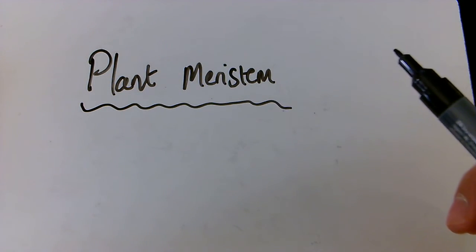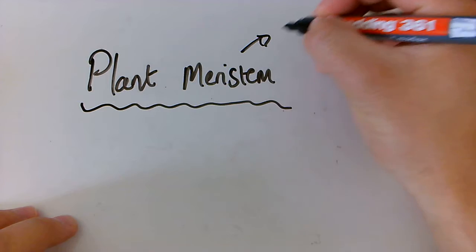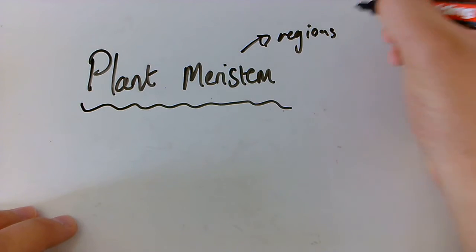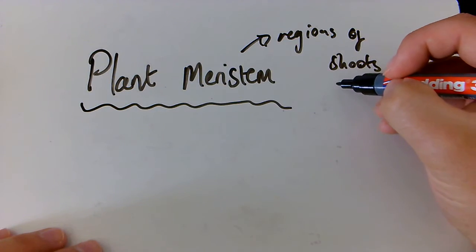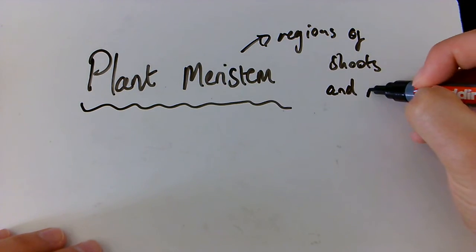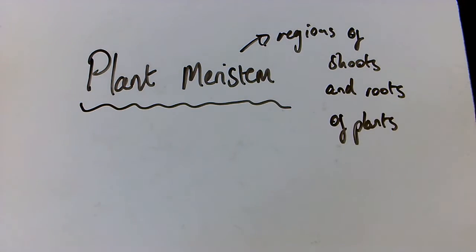Plant meristem cells is going to be the last type of stem cell video that I'm going to create. And these plant meristem cells, they are found in regions of shoots and roots of plants. So that is where they are located.